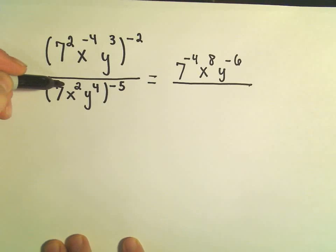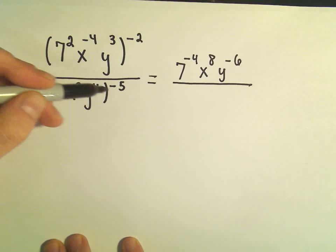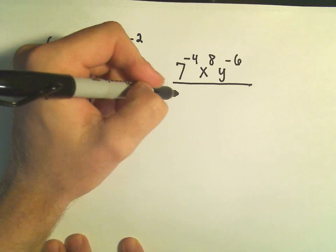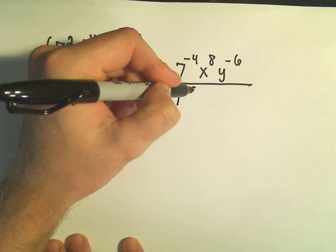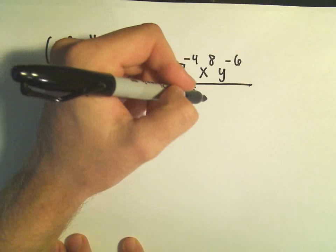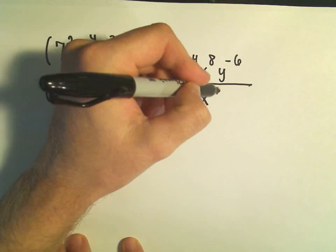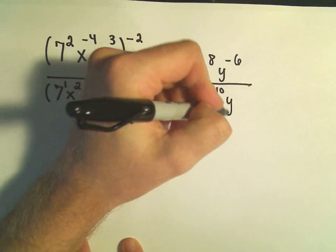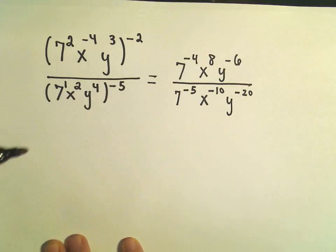On the bottom, remember there's an exponent here, so be careful. I think people have a tendency to only want to somehow apply the exponent to the variables, but you have to do it to the number as well. So this is to the 1st power, so that's going to give us 7 to the negative 5th power. We'll get x to the negative 10 power, and then when we take 4 times 5, we'll get y to the negative 20 power.